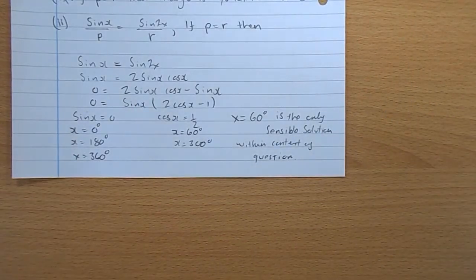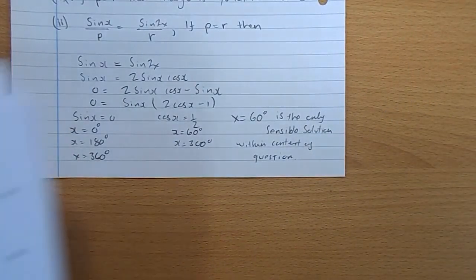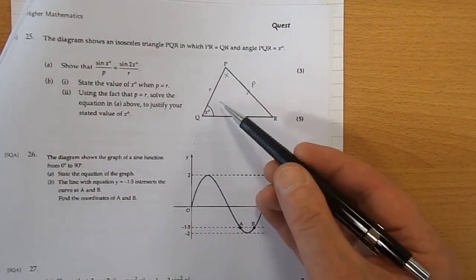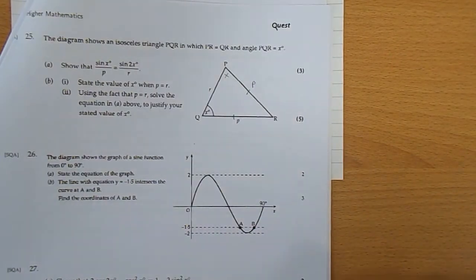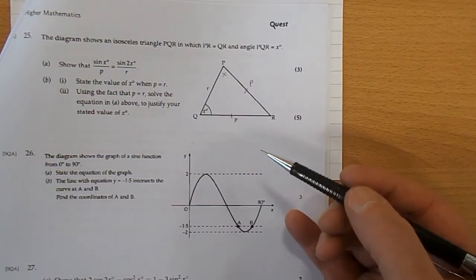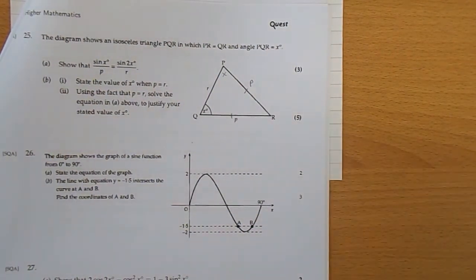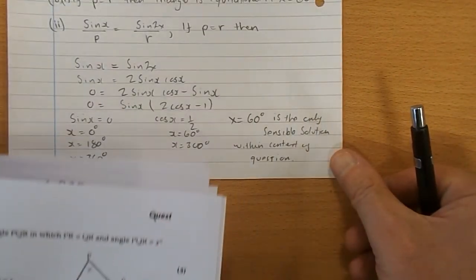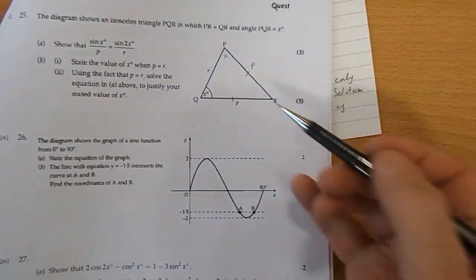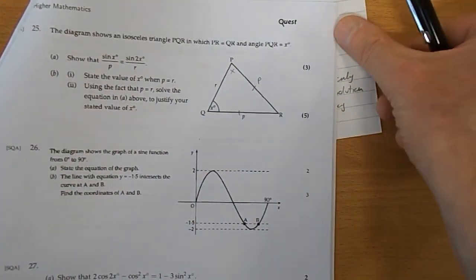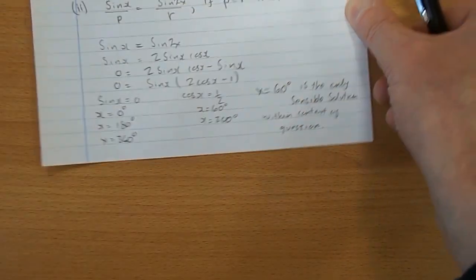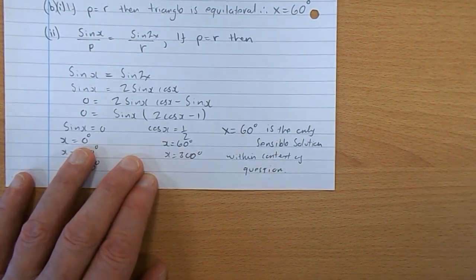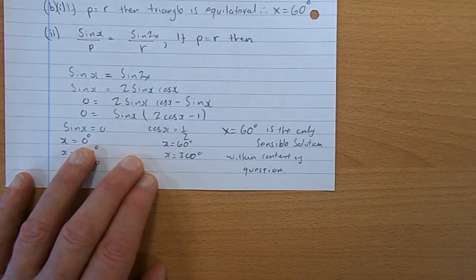Don't forget that X is an angle within a triangle. So really, it can't be 0, 180, or 360. That was our solution to sine X. The solution for the other one, cos X equaling a half, gave us 60 and 300. So 60, X equals 60 is your only sensible solution to that. So that's me written it out formally. X equals 60 is the only sensible solution within the context of the question.